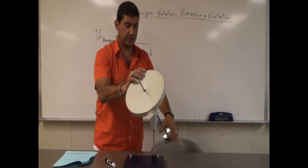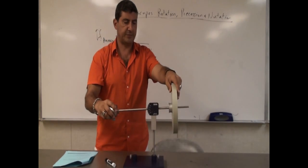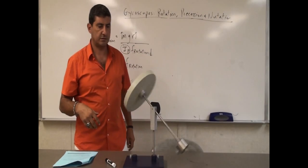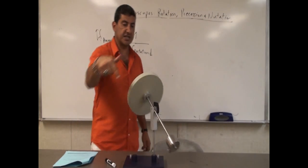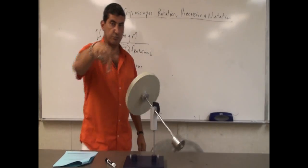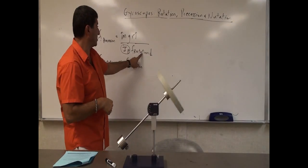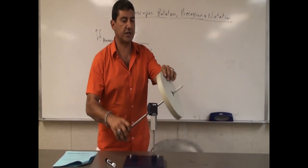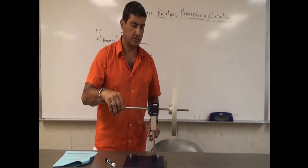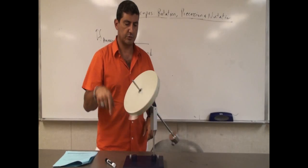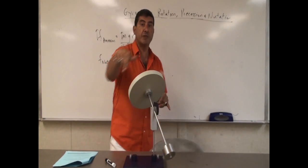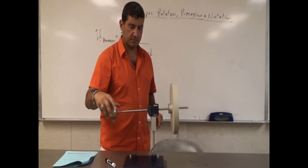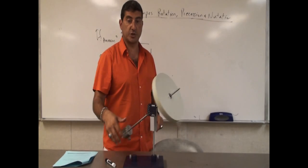Now what if I spin it quickly? Let me do it faster and harder, then let it drop. It's precessing, but not as fast. It's moving around, but not as fast. So if the rotational frequency is high, then the precessional frequency is low. In a laboratory setting, we would measure the time it takes to go around. If you spin fast, it should precess slower.